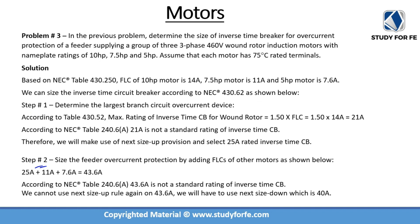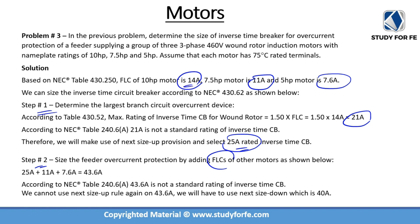In step 2, we size the feeder overcurrent protection by adding the FLCs of the remaining motors to the 25 amps. This 25 amps is the selected OCPD size for the largest branch circuit. We do not use 21 amps or 14 amps. We add 11 amps and 7.6 amps to the 25-amp OCPD from step 1. A very common mistake is adding the FLCs to the FLC of the largest motor, or applying 125%, or using the 21-amp intermediate value.